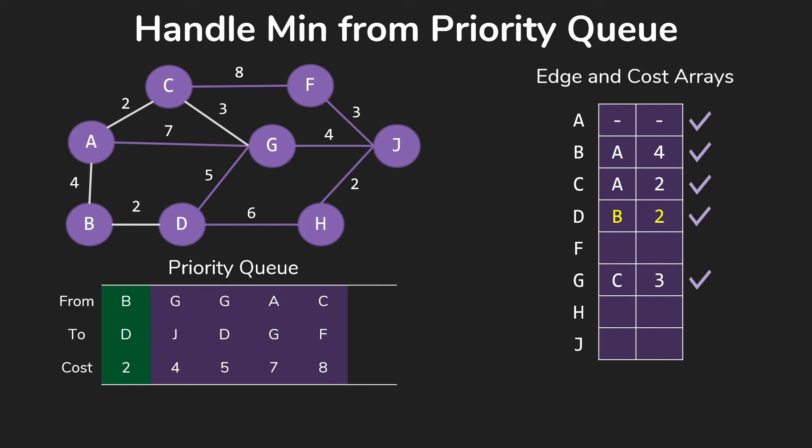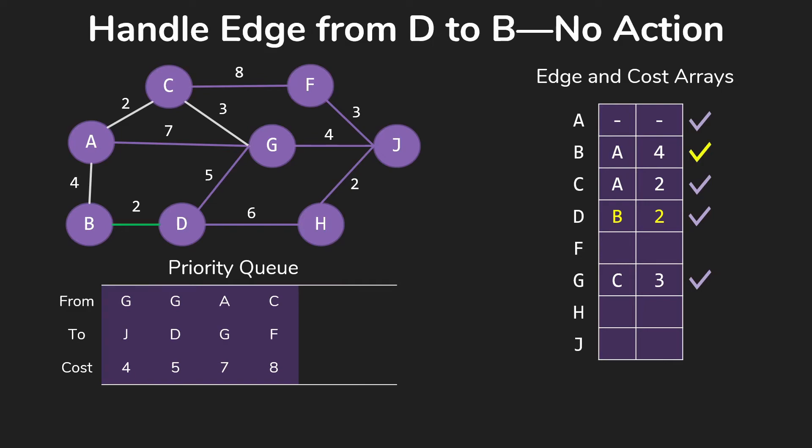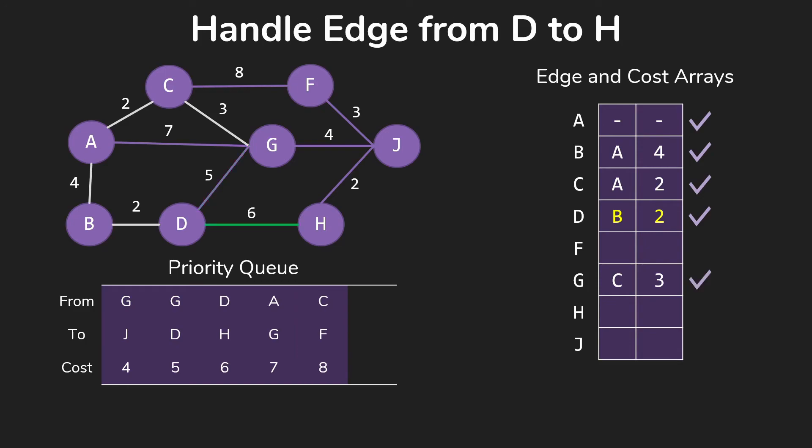Check our loop conditions, and then we'll add that BD edge to our tree. And look at the edges out of it. So of course, B is already part of our spanning tree. G is already part of our spanning tree. H is not. So we put H into the priority queue and check our loop conditions.